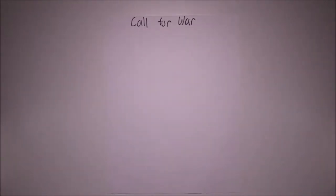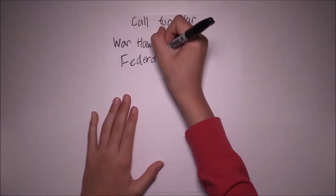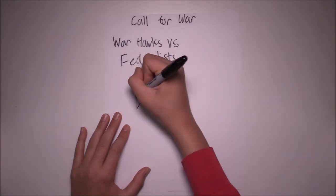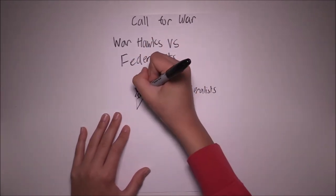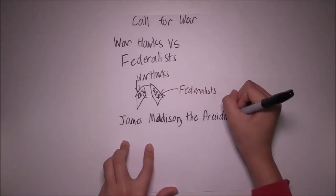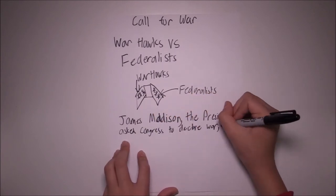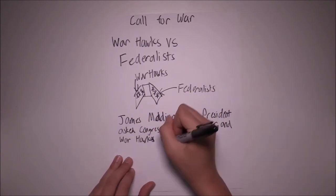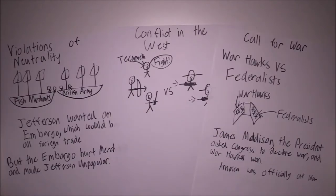Finally, we will be covering Call for War. People named War Hawks in Congress really wanted a war against Britain, but were faced with plenty of opposition. Some argued that America was not powerful enough yet. However, when James Madison was elected, he saw a need for a war and asked Congress to vote. Congress voted for a war, and war was declared. That's it for Section 3.